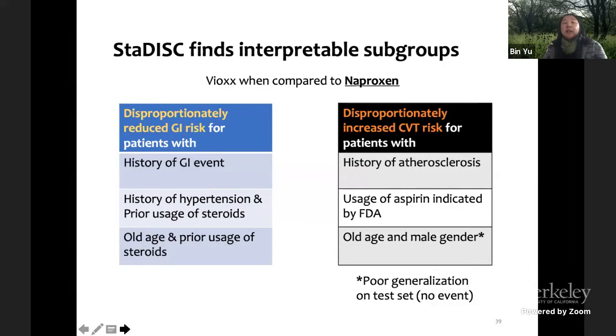We found six groups. Remember we had two events. The naproxen is also an anti-inflammatory drug, it's an older drug. And this is the control arm. So saying Vioxx is better doesn't mean compared with healthy people is better, but this is how the clinical trial was done. We found that if the patients have history of GI event, then Vioxx disproportionately reduced GI risk for patients. Also, if the group of patients with history of hypertension and prior uses of steroids, the third group is old age and prior uses of steroids. So these three groups overlap. Together they consist of about 30% of the patients in the study.